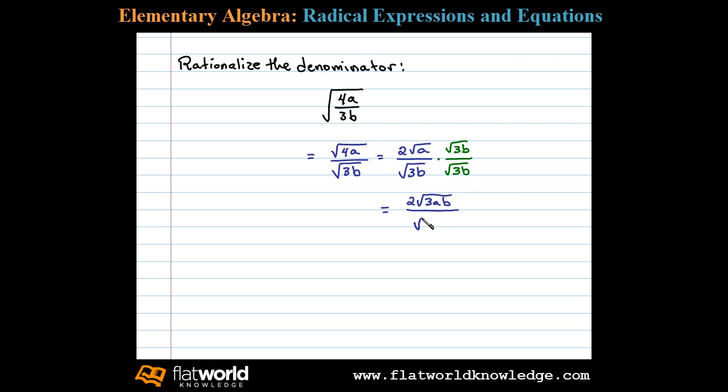In the denominator we have the square root of 9b squared and we can write 2 times the square root of 3ab divided by, well the square root of 9 is 3 and the square root of b squared is b.